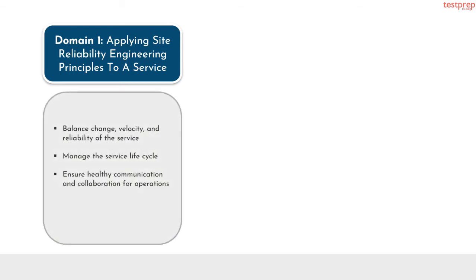Let us now discuss the content outline topics in detail. Domain 1: applying site reliability engineering principles to a service. It contains three subtopics: First, balance change, velocity, and reliability of the service. Second, manage the service life cycle. Third, ensure healthy communication and collaboration for operations.